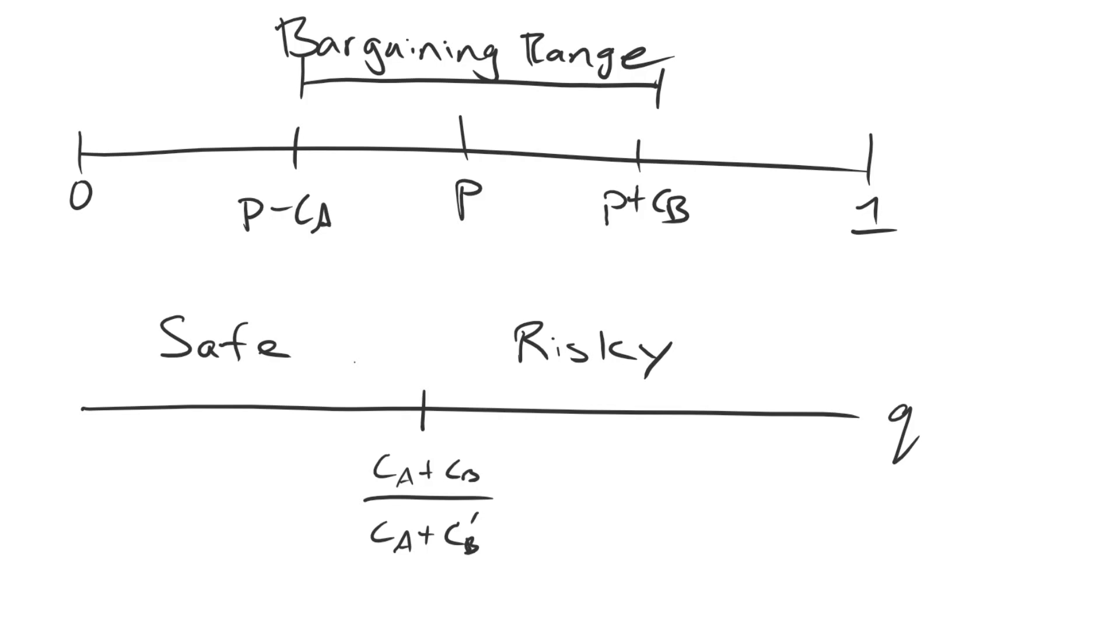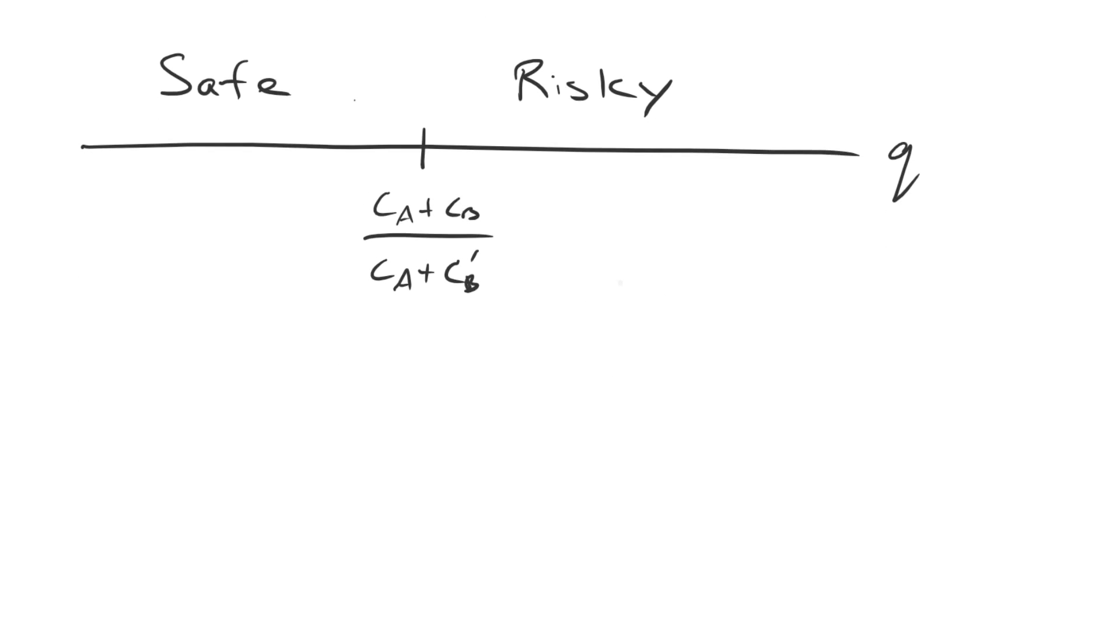The key thing to note here is that this cut point is not a function of the probability of victory. You'll recall that we derived that cut point by comparing the value for making the risky offer to the value to making the safe offer for A. So if A makes the safe amount as its proposal, then it guarantees a payoff of P plus CB.